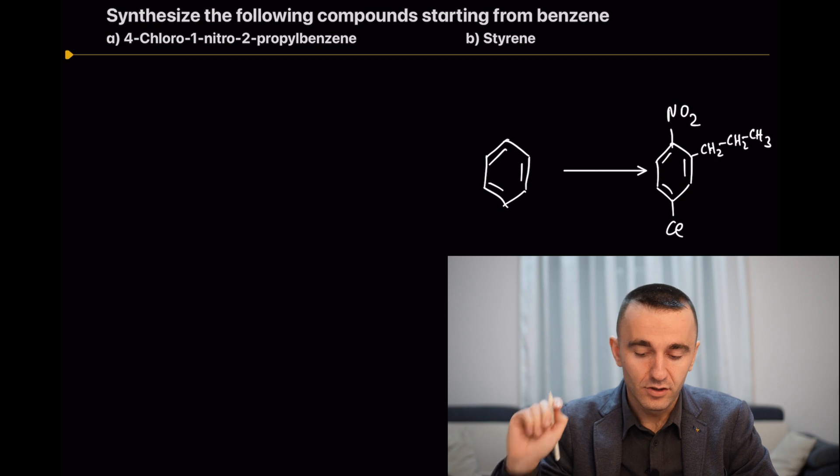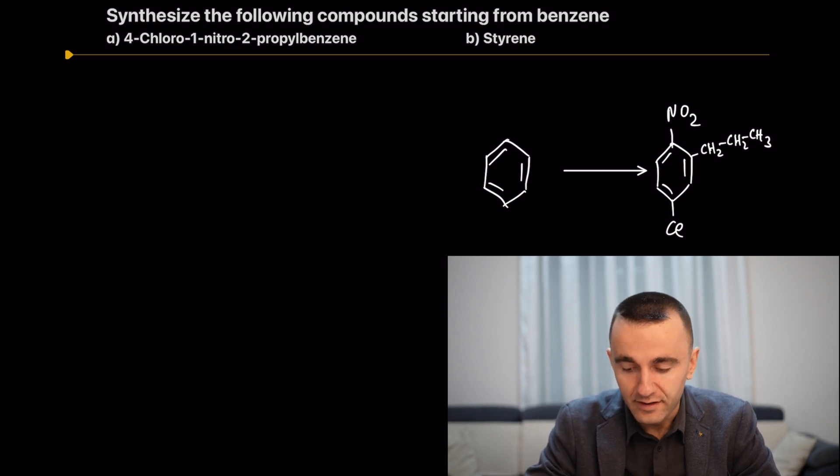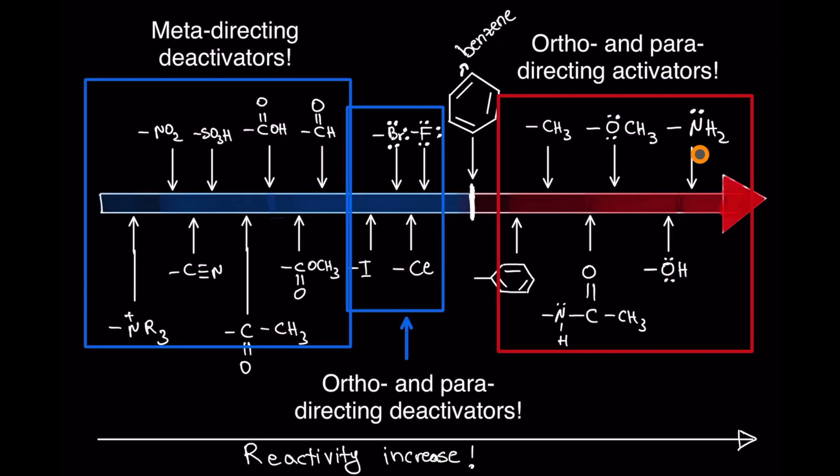From this video, you learned that the nitro group orients in meta position and is a deactivator. A propyl group orients in ortho or para position, and chlorine is a deactivator and orients in ortho and para position. You have to keep this scheme as a note when you're synthesizing, especially with benzene rings.